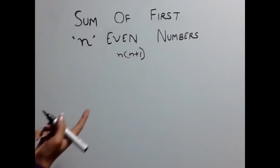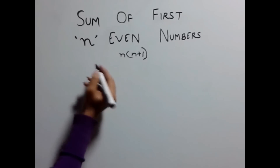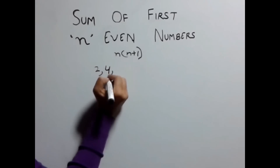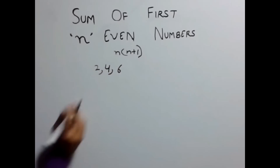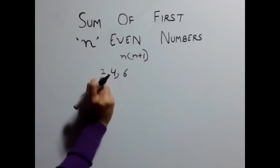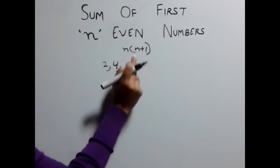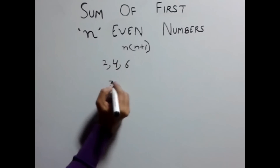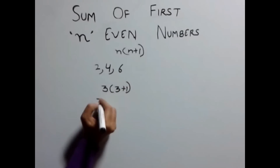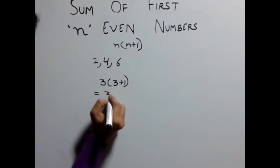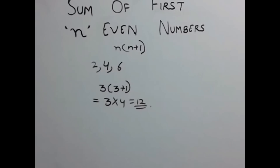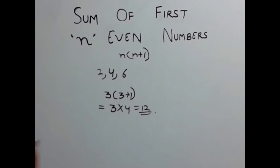So if you need to sum up the first three digits of even natural numbers, which is 2, 4, 6 — n would be 3 here, which is the number of items. Put this 3 in the formula which gives you 3 into 3 plus 1, that is 3 into 4, giving you 12 as the answer. Simple.